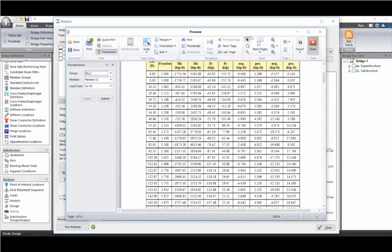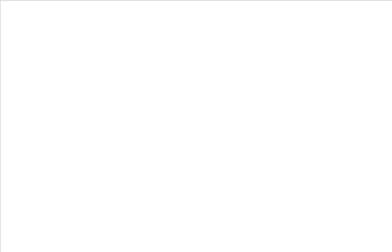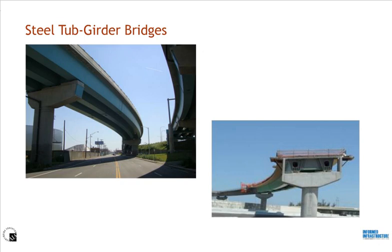This concludes the first part of the webinar. Let me continue with the second part: steel tub girder bridges. Approximately more than 90% of steel bridges in the U.S. are I-girder bridges. However, in the past 10 years or so, the popularity of steel tub girder bridges has been increasing due to certain advantages of this bridge type, especially in curved alignment. Longer span ranges can be achieved with more economical weight due to the very wide bottom flange. Typically, 150 to 500 feet is accepted as the economical span range for tub girders.